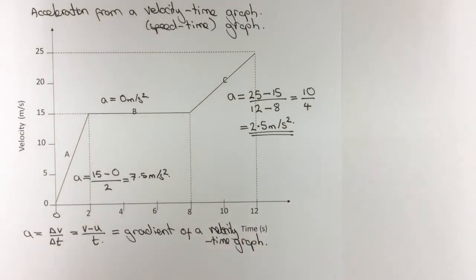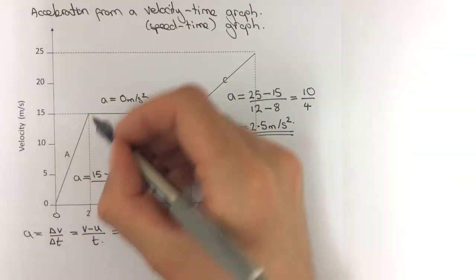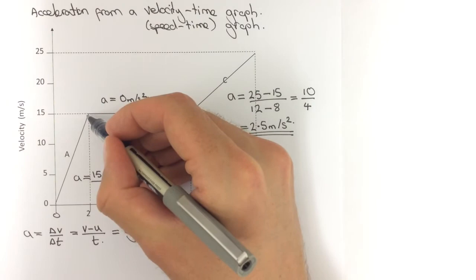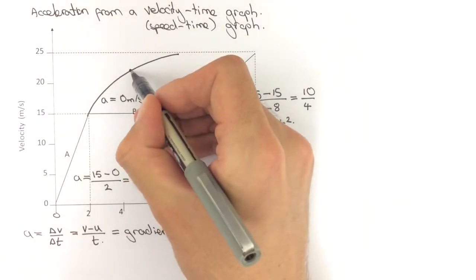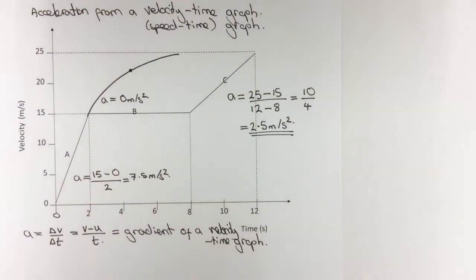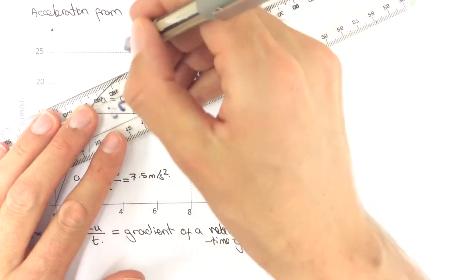So it's worth mentioning that if you had a curved velocity time graph, something like that, and you wanted to know the acceleration at this point, you would have to draw in a tangent and then find the gradient of the tangent.